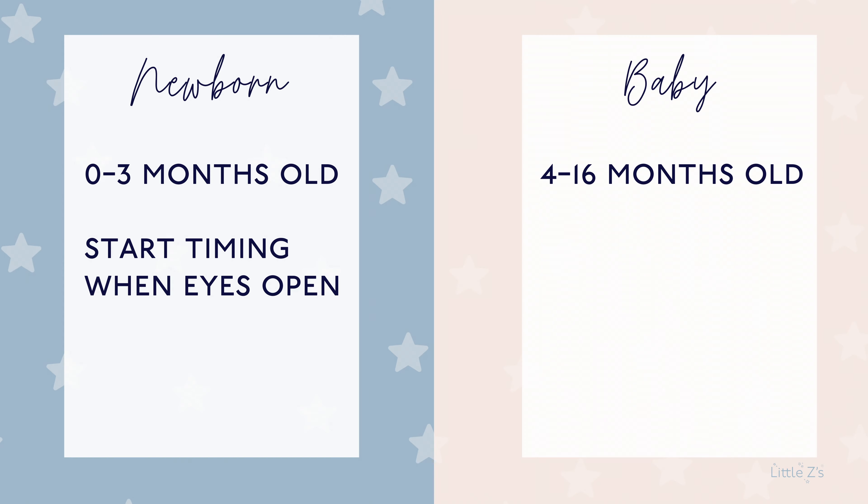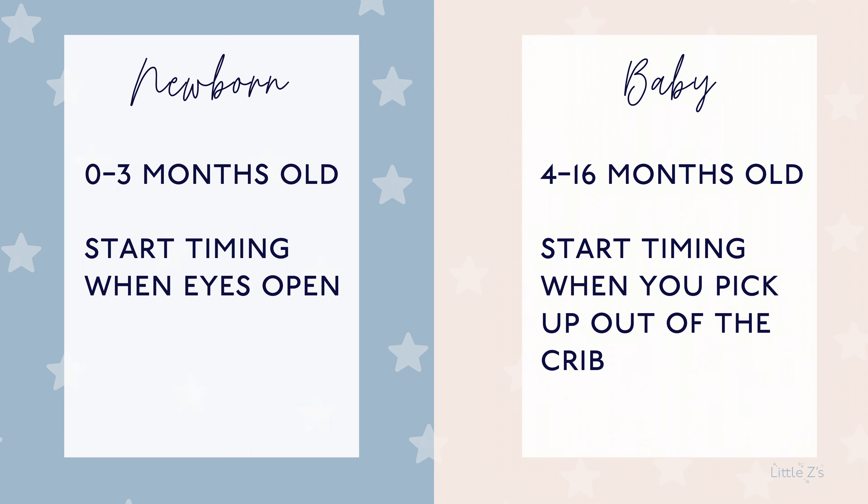For babies — that's four to 16 months old — the wake window begins when you pick them up out of the crib and get them out of their bed. That's when their awake window starts. It's no longer when they open their eyeballs, and there's a big reason. Newborns and babies are totally different. A newborn has a very tiny wake window, while babies have much larger windows — anywhere from 90 minutes for a four-month-old all the way up to five and a half hours for a toddler.